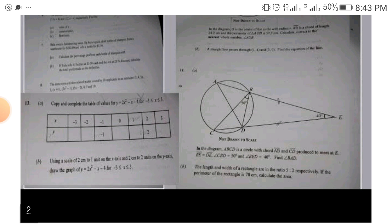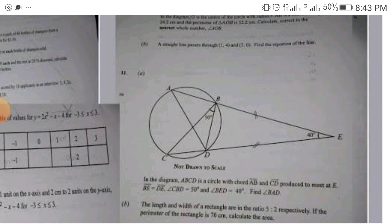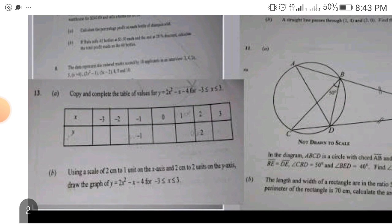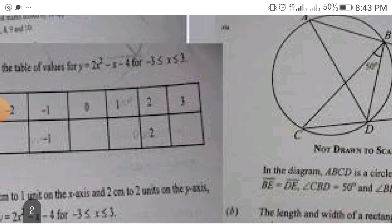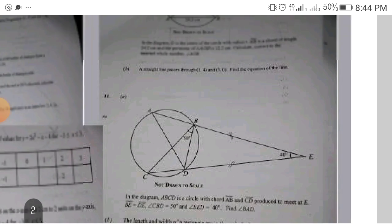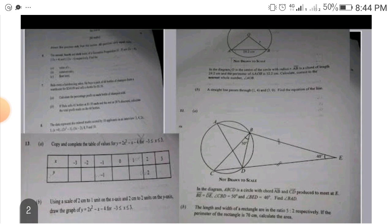If you are writing maths in WASSCE, focus on questions like this. I'm telling you the kind of questions that will come out. Look at this particular question. This is a question that has to do with circle geometry. They say in the diagram ABCD is a circle with chord produced. Look at this number 13. They say copy and complete the table, then they will say using a scale of this to this. So expect that questions of graph will come out.